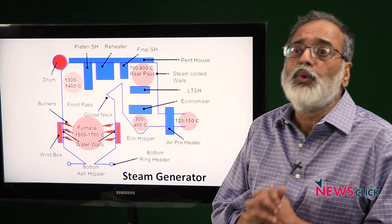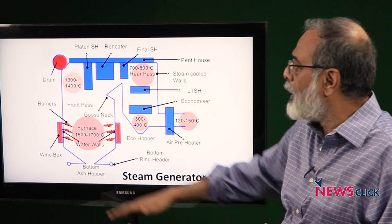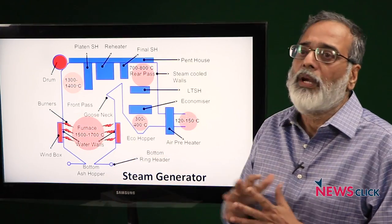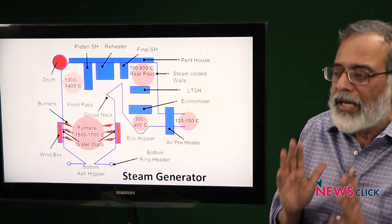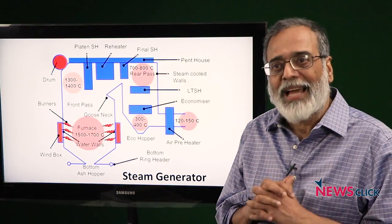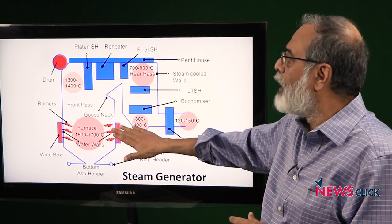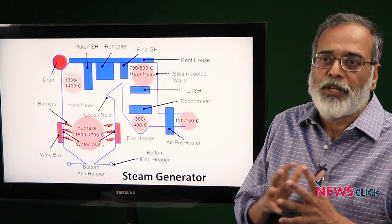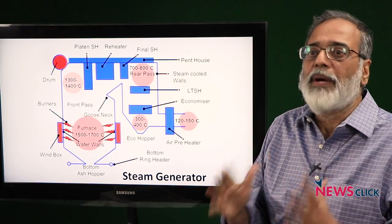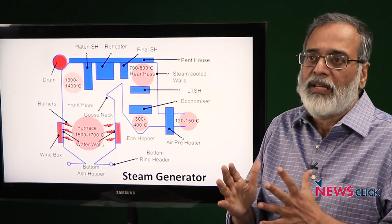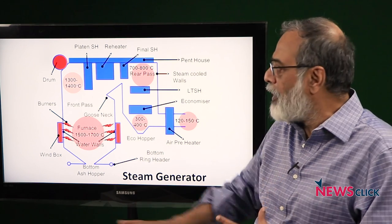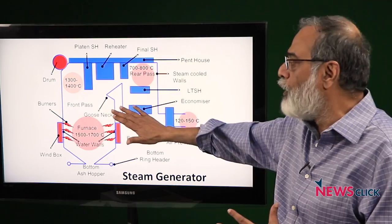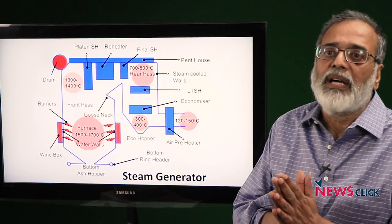While they were doing it, two things happened. Because of the ash build up and clinker formation, the pressure in the boiler started rising. One of the most dangerous things was NTPC seems to have bypassed what is called the master fuel relay trip, which is actuated by high pressure. This is a boiler protection that if the pressure goes high, the boiler should trip, which means all fuel should stop coming to the boiler.